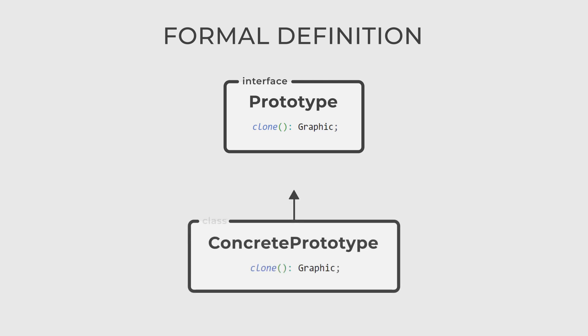There are only two actors in this design pattern. The main interface prototype defines a clone method, and concrete prototype, a subclass of prototype, implements the clone method to create its copies.